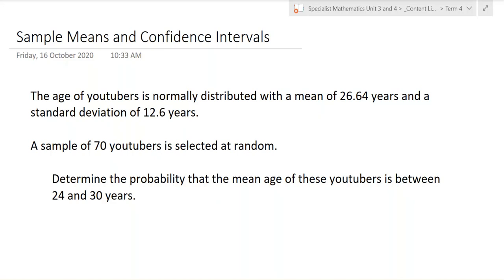I just made that up, I don't actually know the measure of spread for the age of YouTubers. Let's just pretend we're going to take a sample of 70 YouTubers at random and determine the probability that the mean age of these YouTubers is between 24 and 30 years.